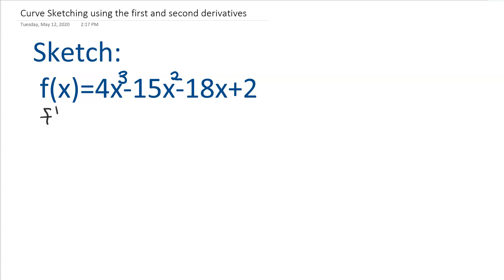So we'll start with our first derivative of our function, and that's going to give us 12x squared minus 30x minus 18. And we're going to find our critical points, so we're going to set that equal to 0 and factor that. So we could take out a 6 from this, and that will sort of downsize our numbers a little bit.